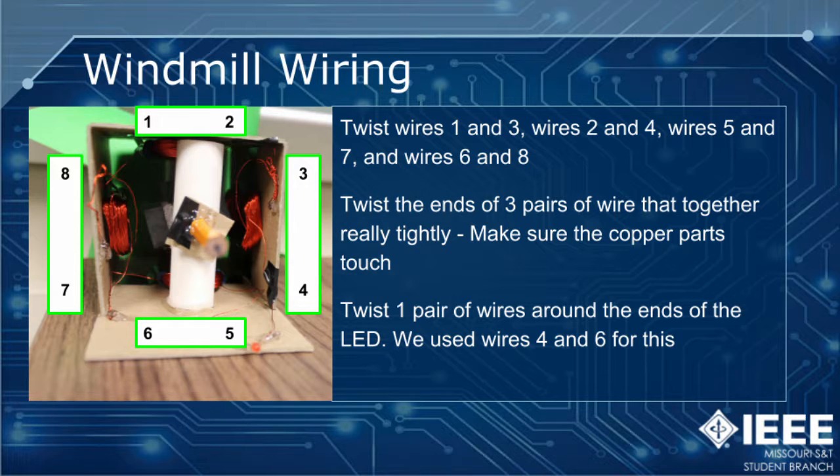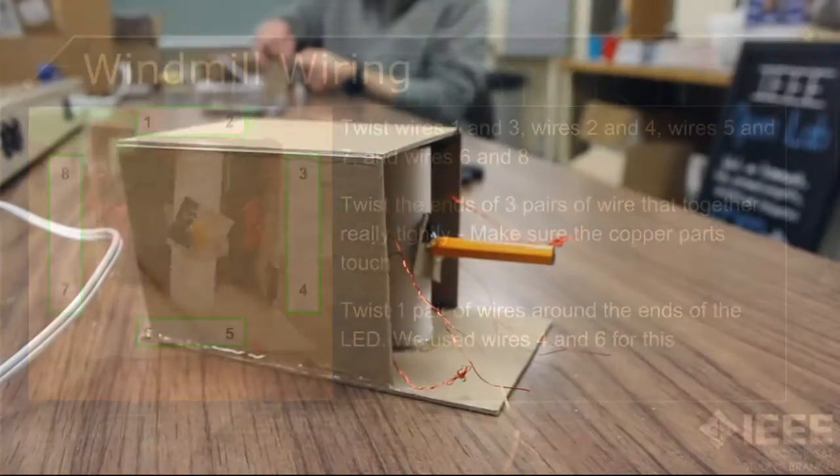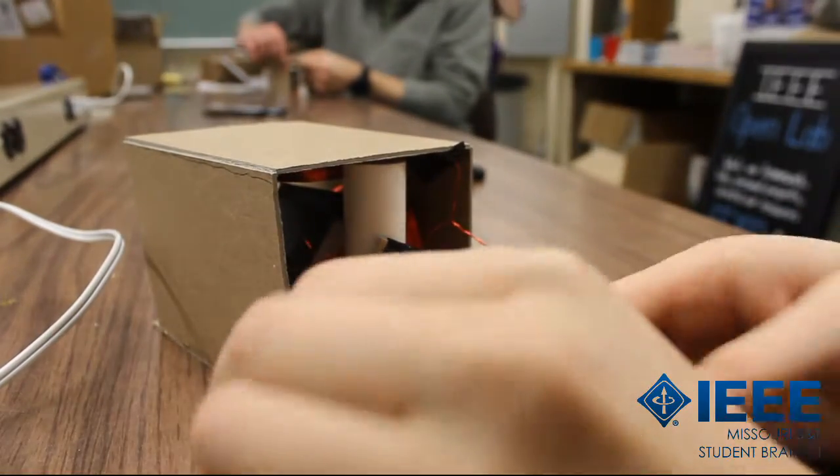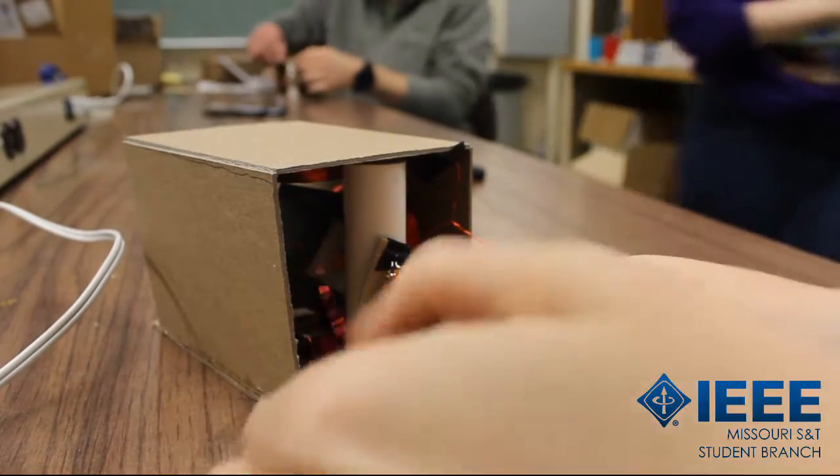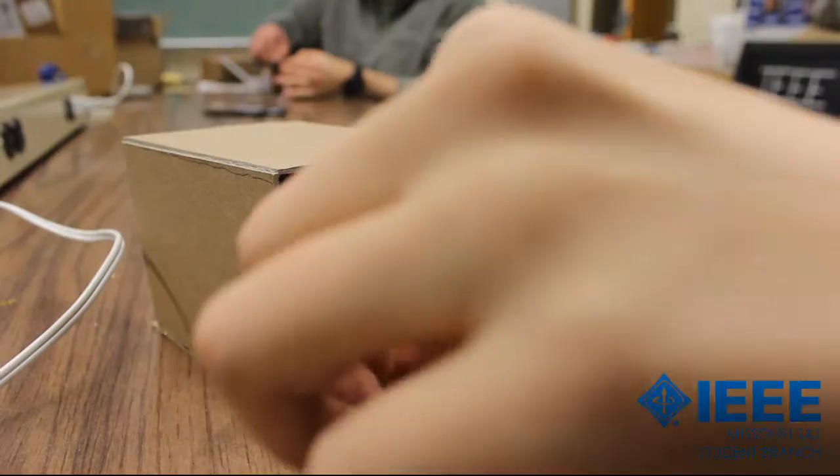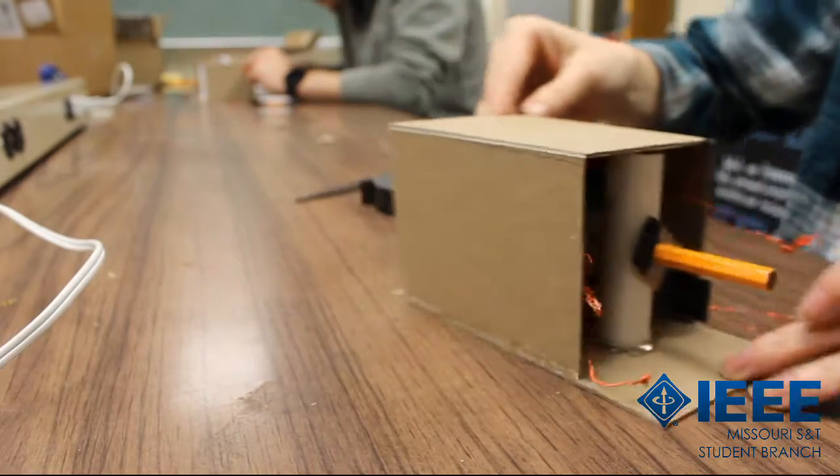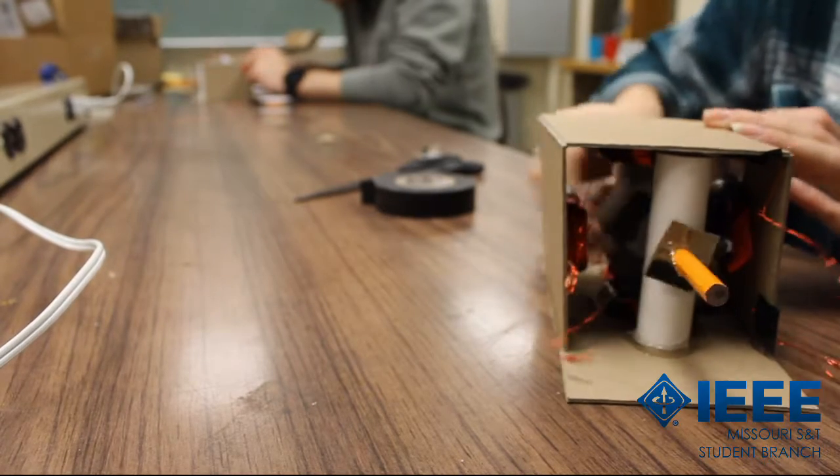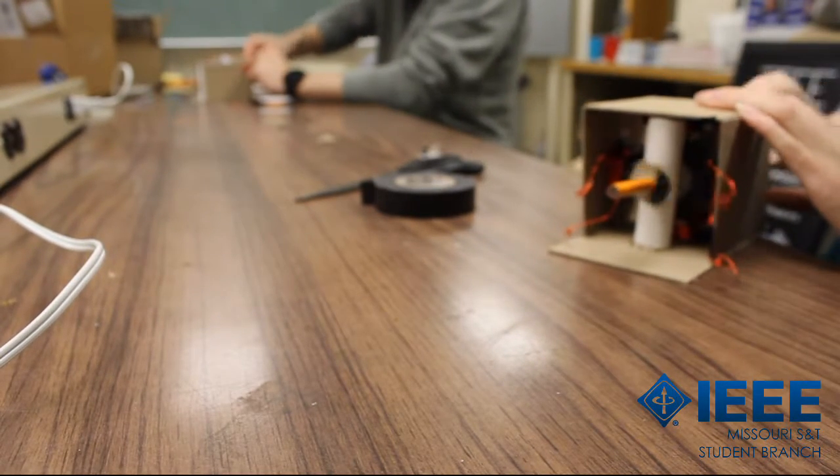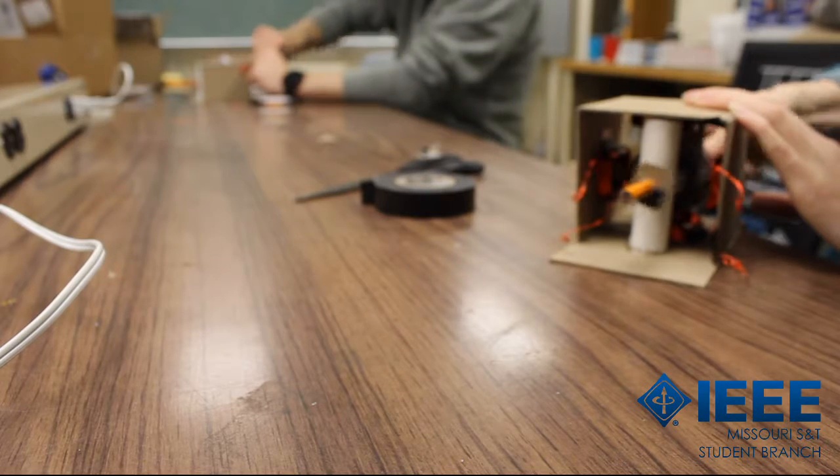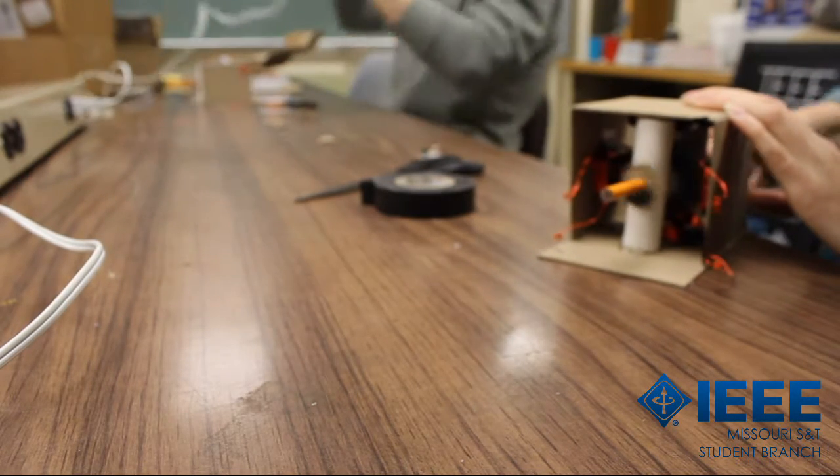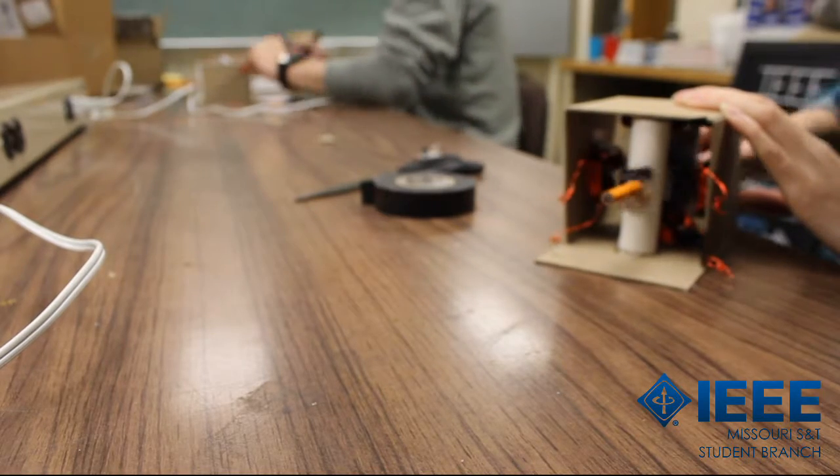Move on to the bottom wire of the right coil and the left wire of the bottom coil. Twist these together lightly, as we'll use these wires to make our LED connection. Tightly twist the right wire of the bottom coil with the bottom wire of the left side coil. Lastly, tightly twist the top wire of the left coil with the right wire of the top coil. Take the loosely twisted pair and attach one wire to each lead of an LED.